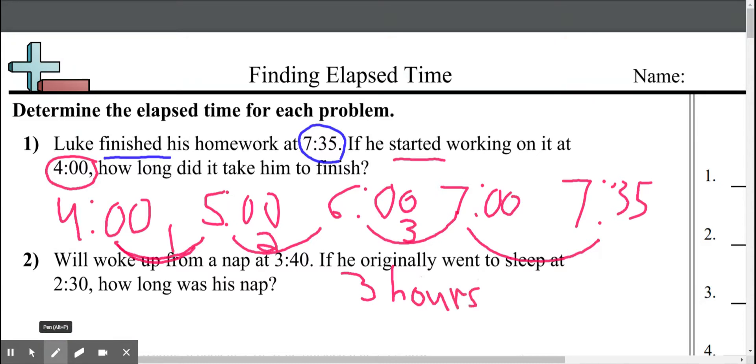And then we got to think about, okay, well, we're already at the 7 o'clock time, but I went from 7, I'm going to do that in different color, and it kind of helps us out a little bit. So I went from 7 to now 7:35. So how many minutes just went up? Well, 35 minutes.